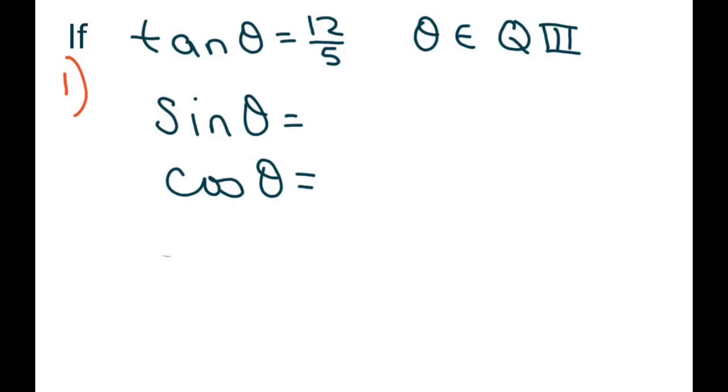It says if tan of theta is -12 over 5, that means that's y over x, and our angle theta belongs to quadrant 3, what is sine and what is cosine of theta?